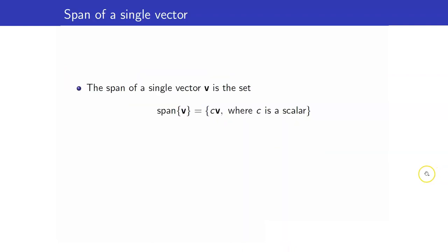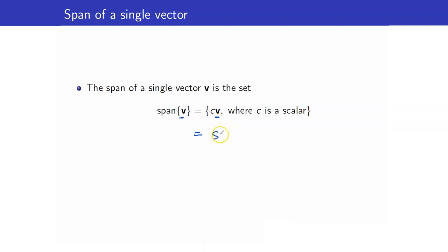How does the span of a single vector look like? If we have a single vector v and we want to find its span, since we only have one vector, we multiply it by a scalar — there are no other vectors. So this set is the set of all scalar multiples of v.